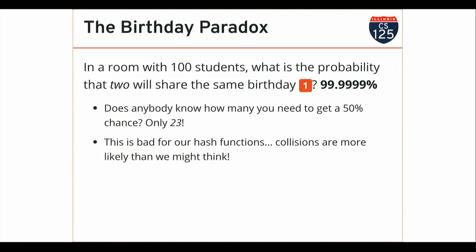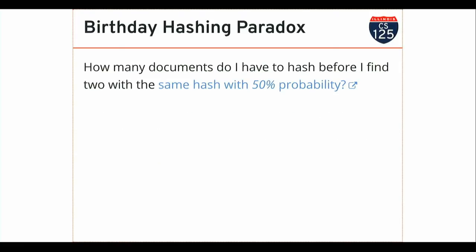This has unfortunate consequences for our hash functions. From Git's perspective, Git is going to melt down and die if two files hash to the same hash value. GitHub.com probably has problems if any two different files anywhere hash to the same value — I don't know how many files are on GitHub, but I suspect it's billions. So how many documents do I have to hash before I find two with the same hash value with 50% probability or more? This depends on how large the hash is.